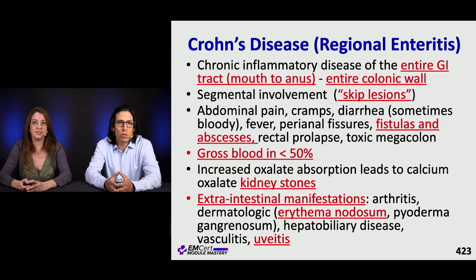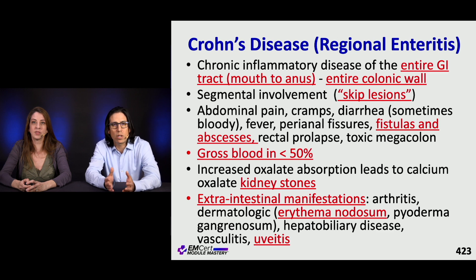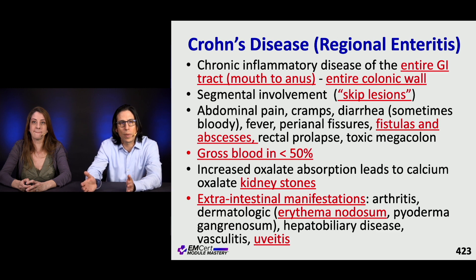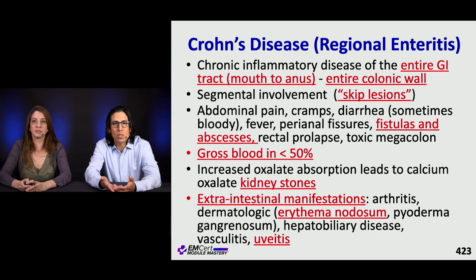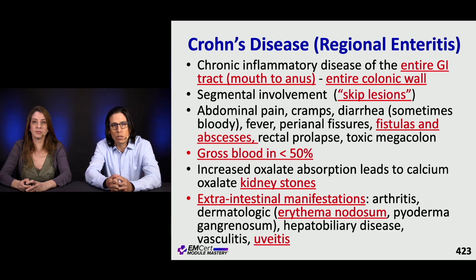Crohn's disease is a chronic inflammatory disease that involves the entire GI tract, but it doesn't have to be contiguous. The classic finding is skip lesions — interspersed areas of inflammation in normal bowel — causing abdominal pain, cramps, and sometimes bloody diarrhea. These patients can suffer from fistulas, abscesses, rectal prolapse, and toxic megacolon. Increased oxalate absorption can lead to calcium oxalate kidney stones, and there can be extra-intestinal manifestations such as arthritis, erythema nodosum, biliary disease, or uveitis.